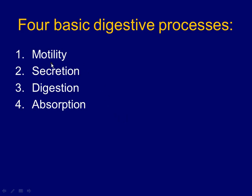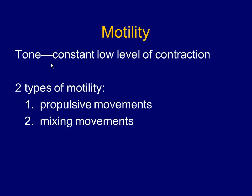Every time we talk about an organ through the GI tract, look at these four points: motility, secretion, digestion, and absorption. That's the key to this section. Your textbook also organizes around these four major processes.